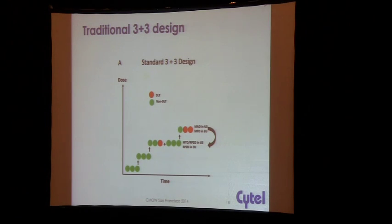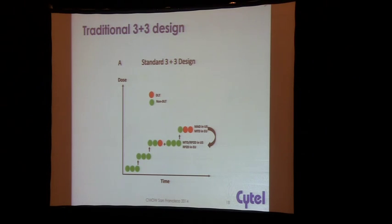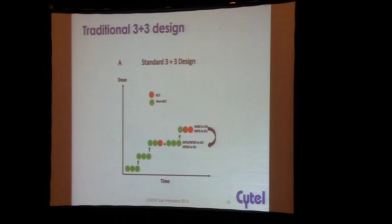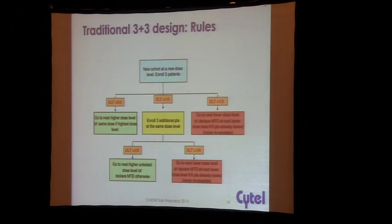That seems to be changing, which is part of the reason we're talking about this today. With the standard 3+3, you basically study three patients at a time. Each cohort is three patients, and depending on what you see in terms of dose-limiting toxicities, you either increase, decrease, or stay at the same dose. The rules are extremely simple, and that's part of the reason it's been so popular.